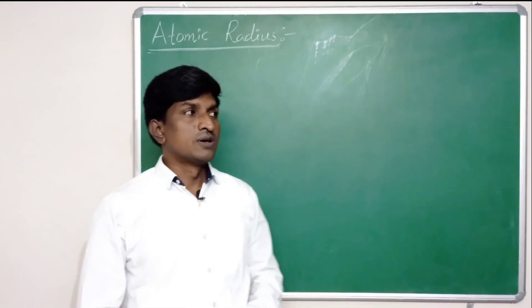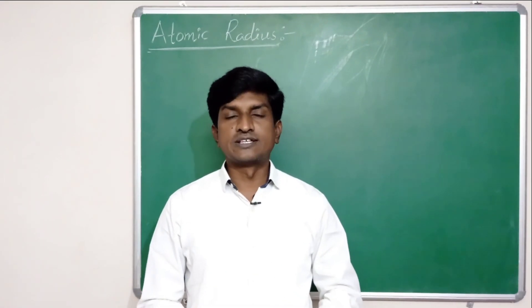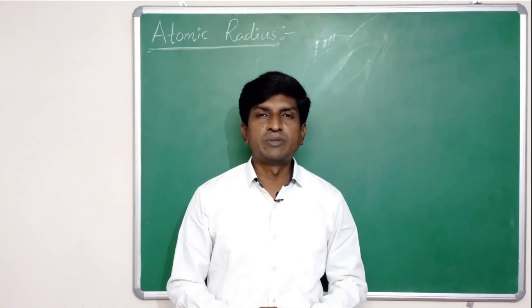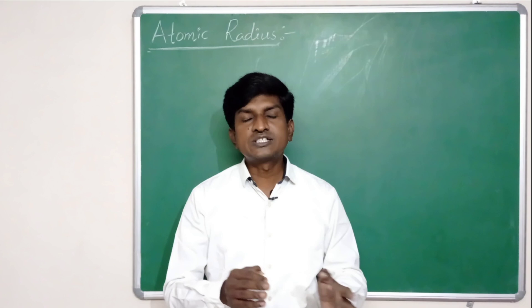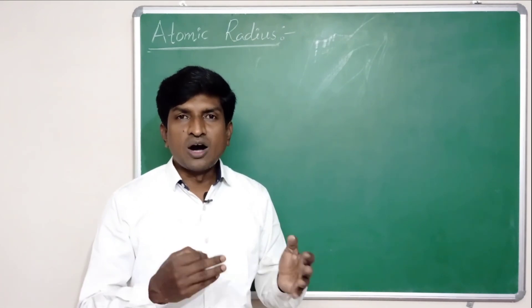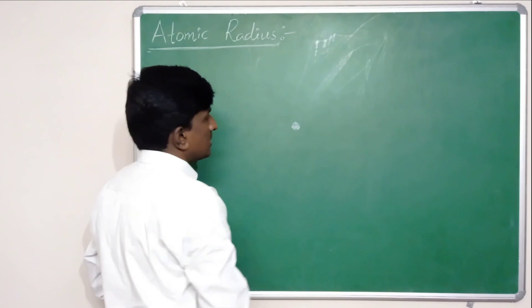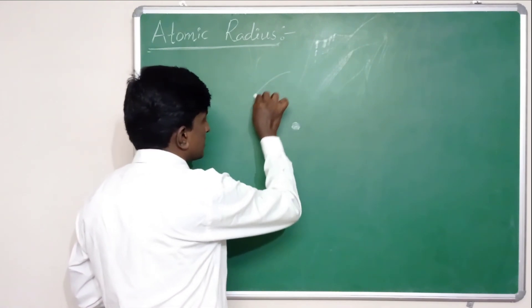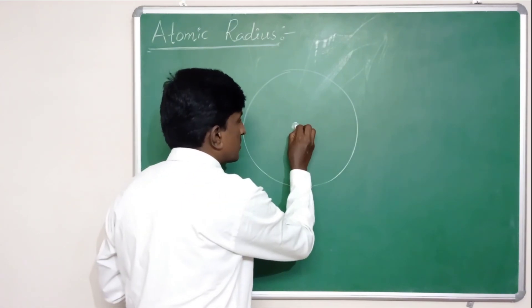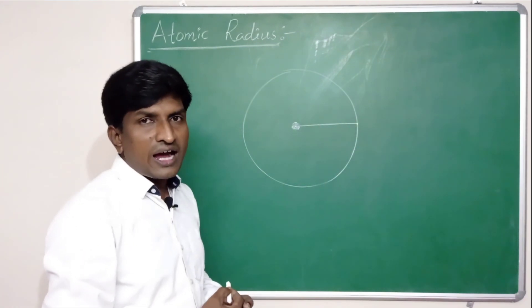Let's enter into our topic. First, what is atomic radius? The atomic radius of an atom is defined as the distance from the center point of the nucleus to the outermost orbit of that atom. For example, this is the nucleus, and this is the outermost orbit. The distance between the center point of the atom to the outermost orbit is called the atomic radius.